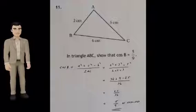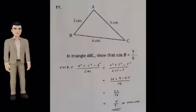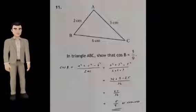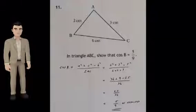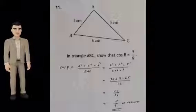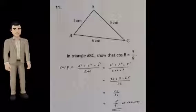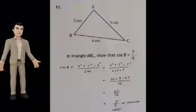cos B equals A squared plus C squared minus B squared all over 2AC. So 6 squared plus 3 squared minus 5 squared all over 2 times 6 times 3. So that equals 36 plus 9 minus 25 all over 36, which is 20 over 36, which is 5 over 9 as required.